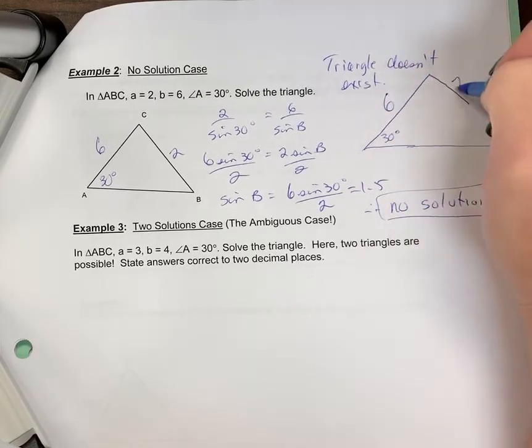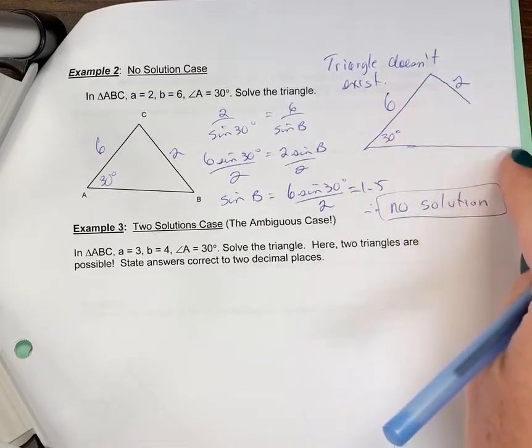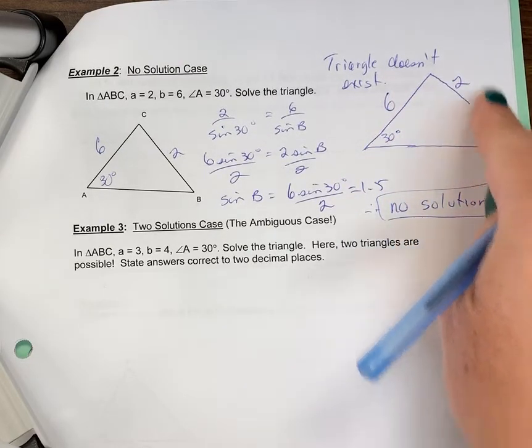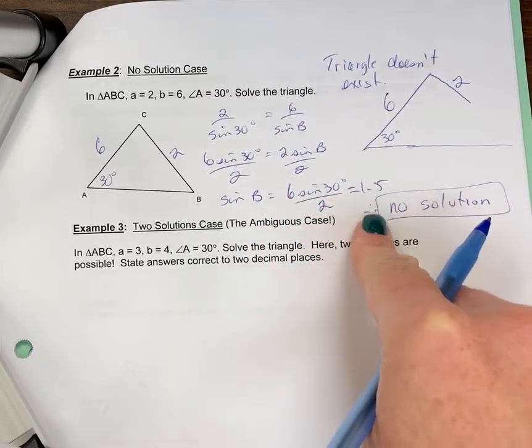So if this is 6 and this is 2, because this is much smaller, this side is so small that it's not long enough to actually connect to the bottom side. So this triangle does not exist, which is why we're getting this problem when we actually do the calculation.